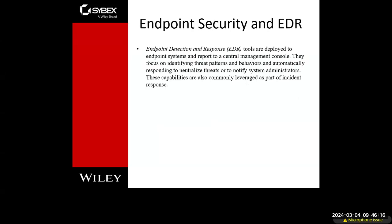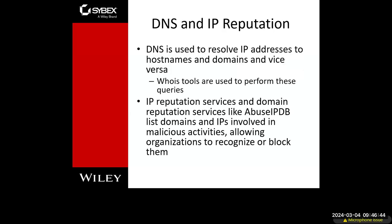Endpoint security — our EDR, endpoint detection and response — are deployed to the endpoint system: laptops, tablets, PCs, desktops, and even IoT devices. They focus on identifying threat patterns and basically tell the system to shut down, go offline, or do something so it does not threaten the network and spread further. Then there's DNS and IP reputation. DNS is used to resolve IP addresses to host names. Whois is a tool used for this. IP reputation and domain reputation services like AbuseIPDB and MX Toolbox can provide information to flag malicious sites.